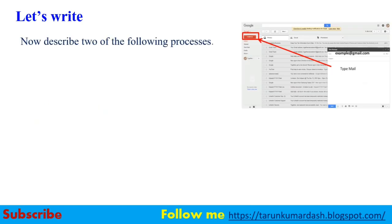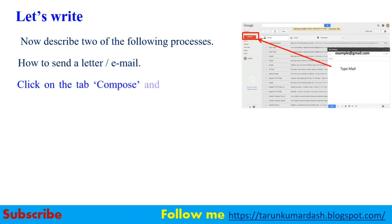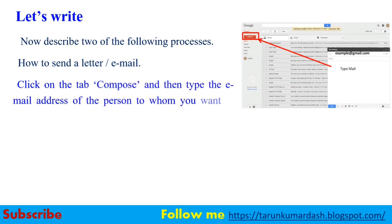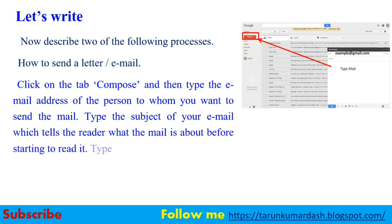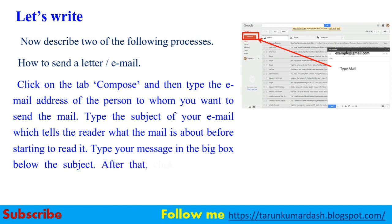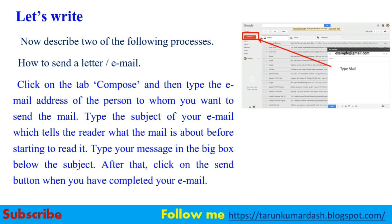Now describe two of the following processes. How to send an email: click on Compose, then type the email address of the person to whom you want to send the mail. Type the subject of your email, which tells the reader what the mail is about before starting to read it. Type your message in the big box below the subject. After that, click on the Send button — the blue Send button in the white box — when you have completed your email.